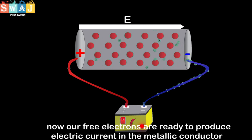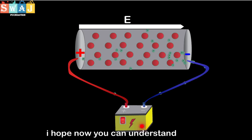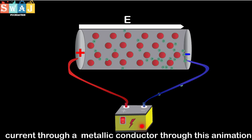Now our free electrons are ready to produce current in a metallic conductor. I hope now you can understand current through a metallic conductor through this animation.